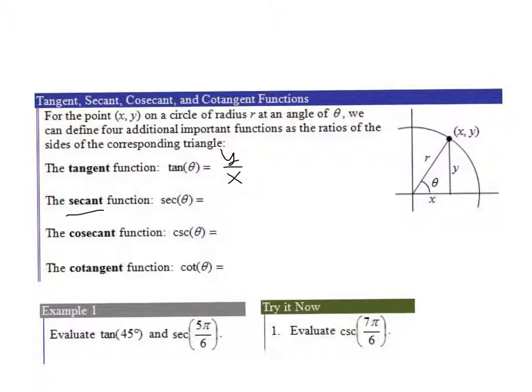The secant is reciprocal of the cosine. So remember how the cosine was x over r? Well, the secant is going to be r over x. What's nice about this is if you know the cosine, you just take the reciprocal, you flip it, and that'll tell you the secant.